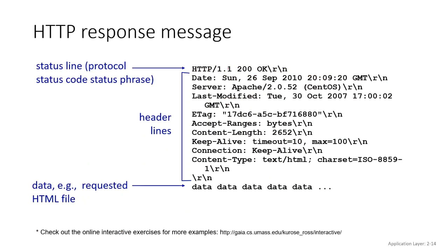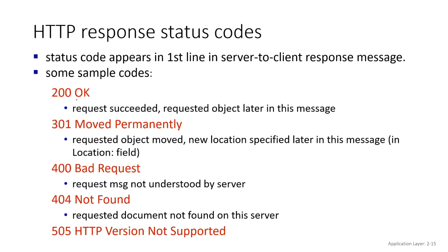Now let's speak about the response. The response is similar to the request but contains more information: protocol version, server details, and so on. The most important element is the response code. Key codes: 200 means success — you have access to that page. 301 is a redirect. 400 is a bad request. 404 means the page is not found — most of you know that one. 505 means the HTTP version is not supported.